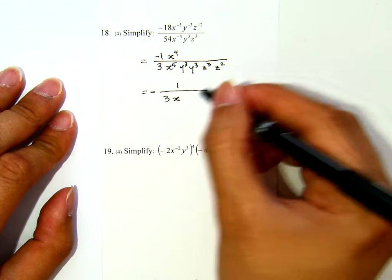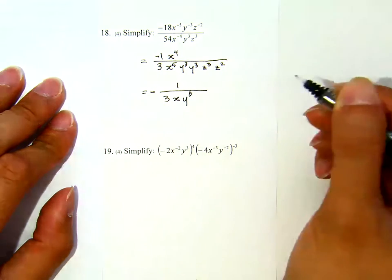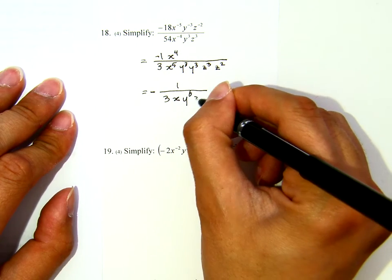Some of them cancel. So, for the y, y cubed, y to the 6th I mean, and for the c, that will be c to the 5th.